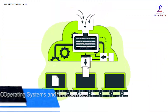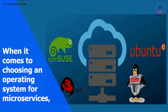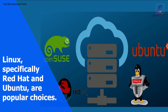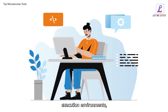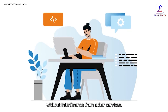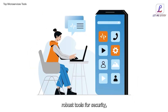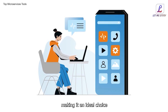Operating systems and microservices: when it comes to choosing an operating system for microservices, Linux — specifically Red Hat and Ubuntu — are popular choices. Linux offers self-contained execution environments which allow each microservice to run independently without interference from other services. Additionally, Linux provides robust tools for security, storage, and orchestration, making it an ideal choice for microservice architectures.